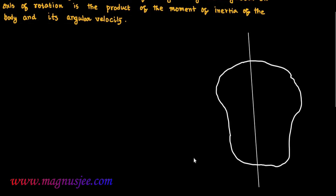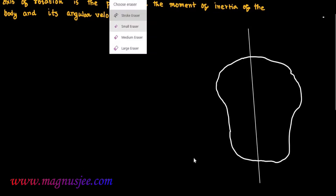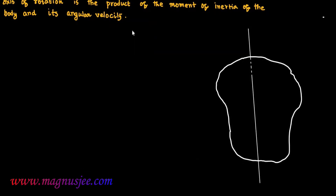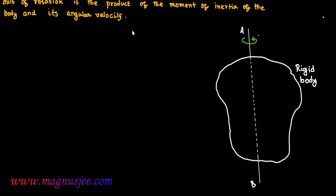In the diagram, this is a rigid body and AB is the axis of rotation, about which the body rotates. This rigid body rotates with an angular velocity omega about the axis of rotation AB. Omega is the angular velocity of the rigid body.